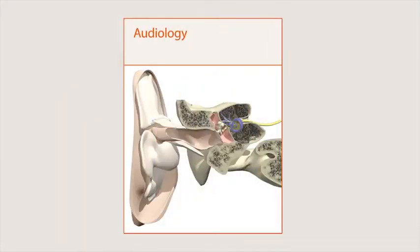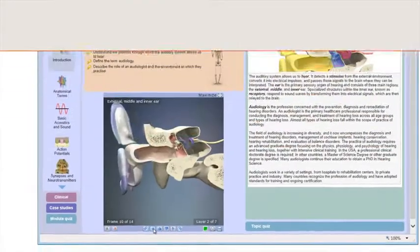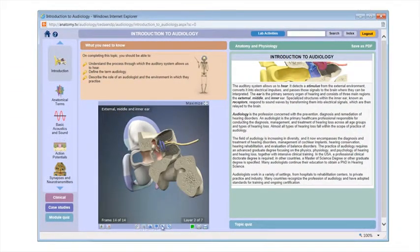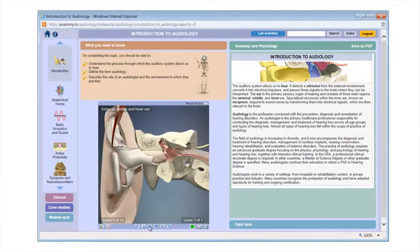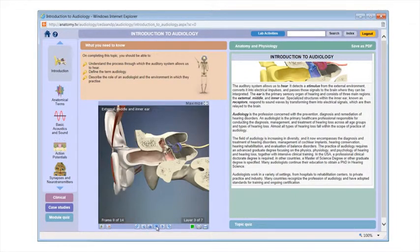Human Anatomy and Physiology for Audiology provides instructors and students with the ability to view, rotate, explore and label the accurate and appealing 3D anatomical models to teach and master both gross and micro-anatomy more effectively.